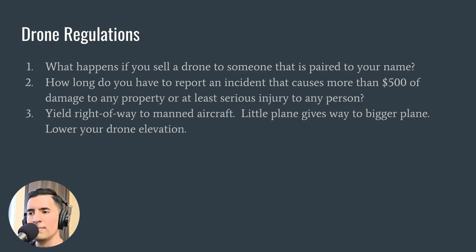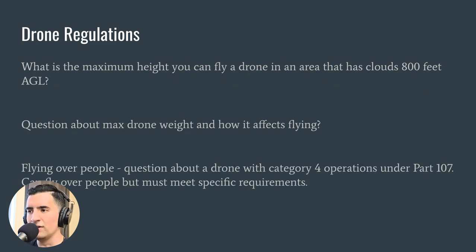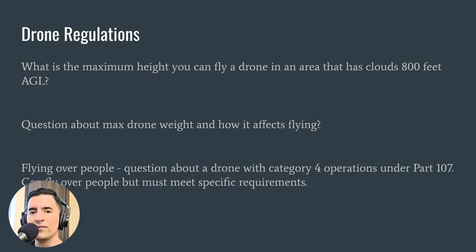Yield right of way to manned aircraft — little plane gives way to bigger plane. There was a question on what to do if you see a manned aircraft in your visual line of sight while your drone is flying — you would lower your drone's elevation. What is the maximum height you can fly a drone in an area where clouds are 800 feet above ground level? The answer is 300 feet, because the rule requires flying 500 feet below the cloud ceiling.